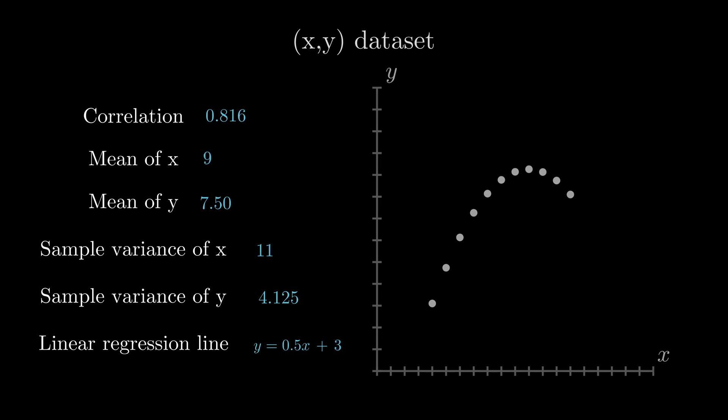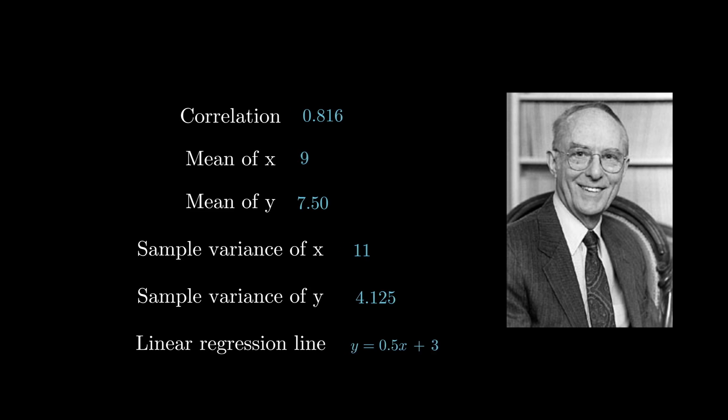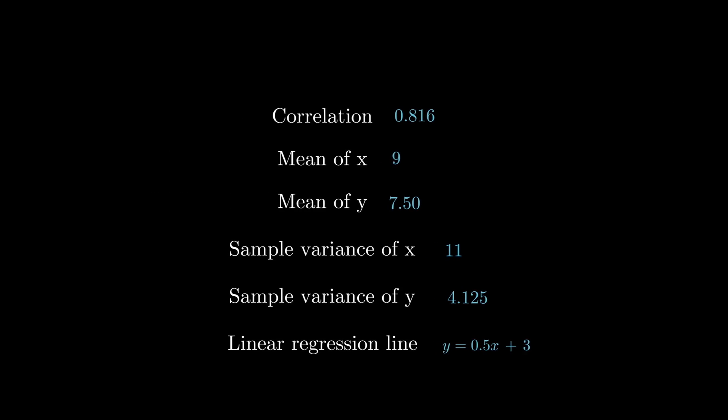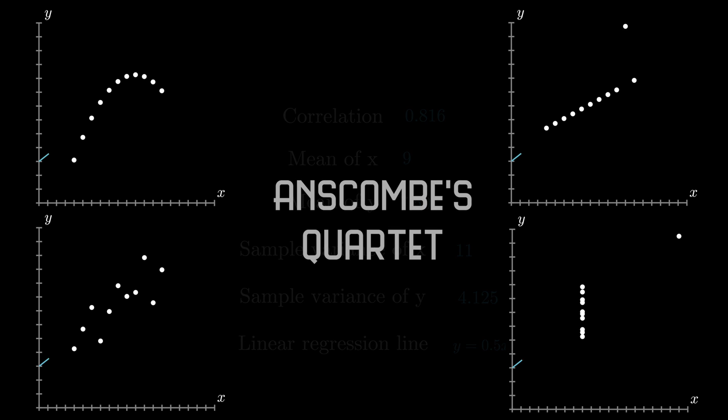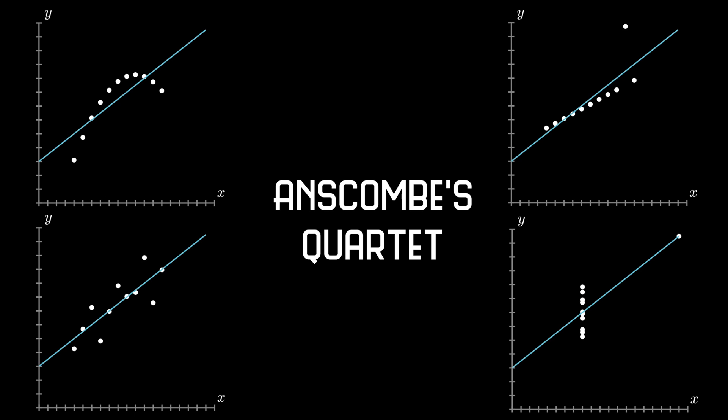Well, no, because Francis Anscombe showed in 1973 that there are at least four drastically different datasets with the same statistical metrics, up to several decimal places, of course. Thus, if you only have the numbers, you know very little about the true distribution.